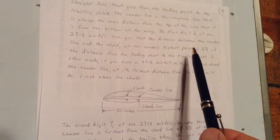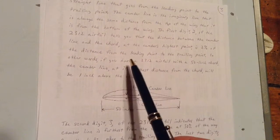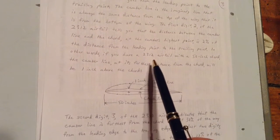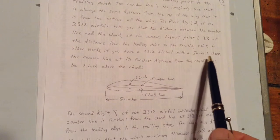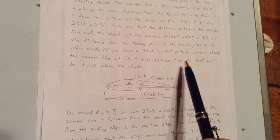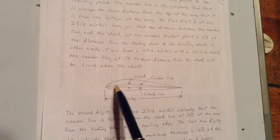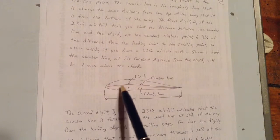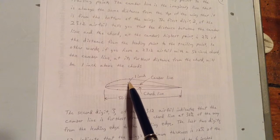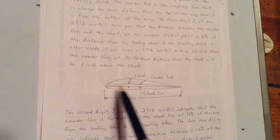In other words, if you have a 2-3-1-2 airfoil with a 50 inch cord, the camber line at its furthest distance from the cord will be 1 inch above the cord. See here? There's the curved camber line. There's the straight cord line. The camber line is 1 inch above the cord line because this is a 50 inch airfoil.